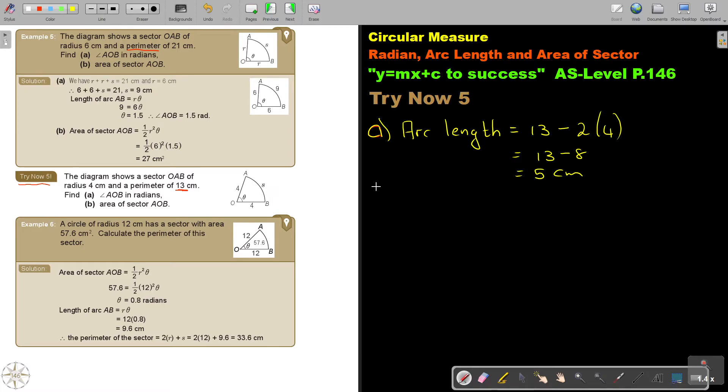And so, then I'm going on, and I'm going to say, the length of an arc AB is equal to R theta. Now, I have the length, that's 5. I have the value of R, that's 4, and I'm looking for the angle.